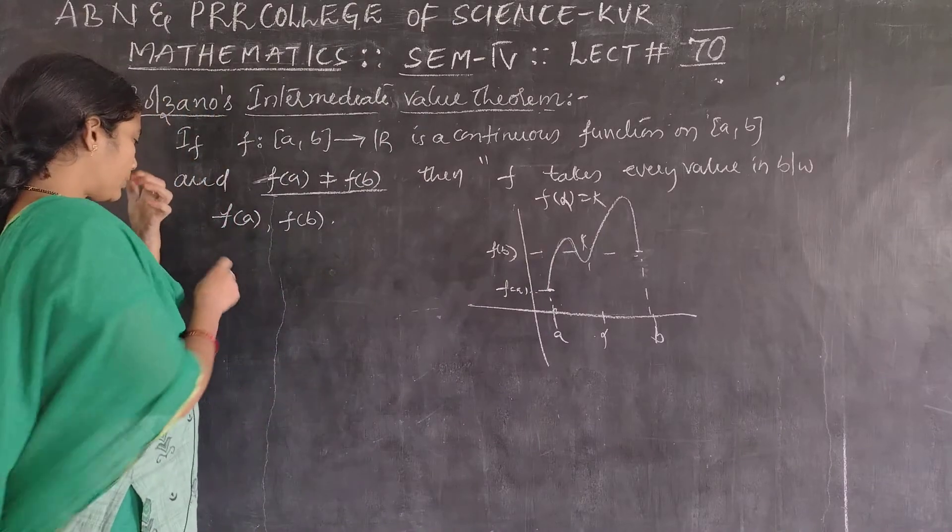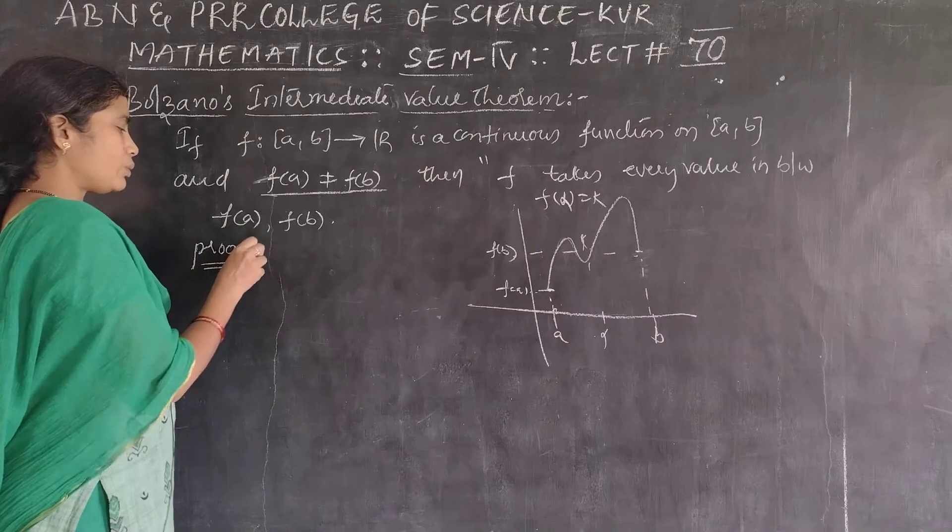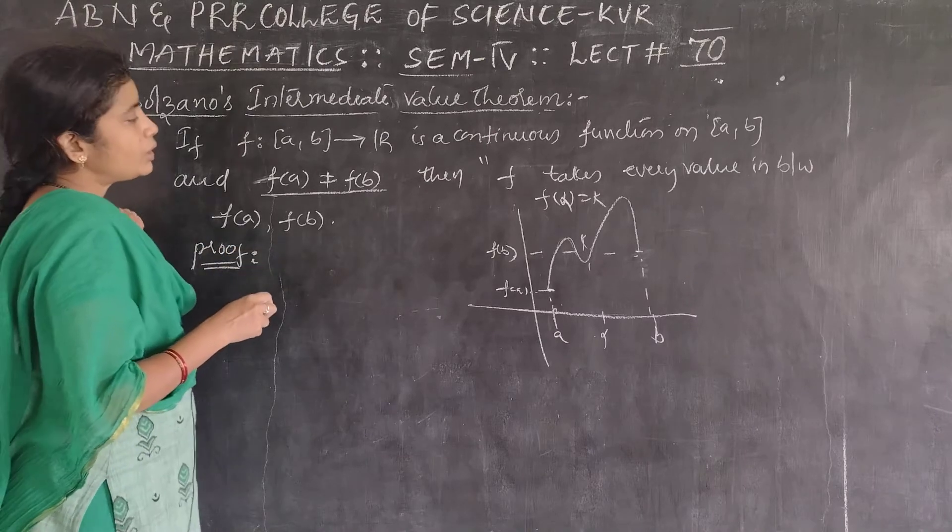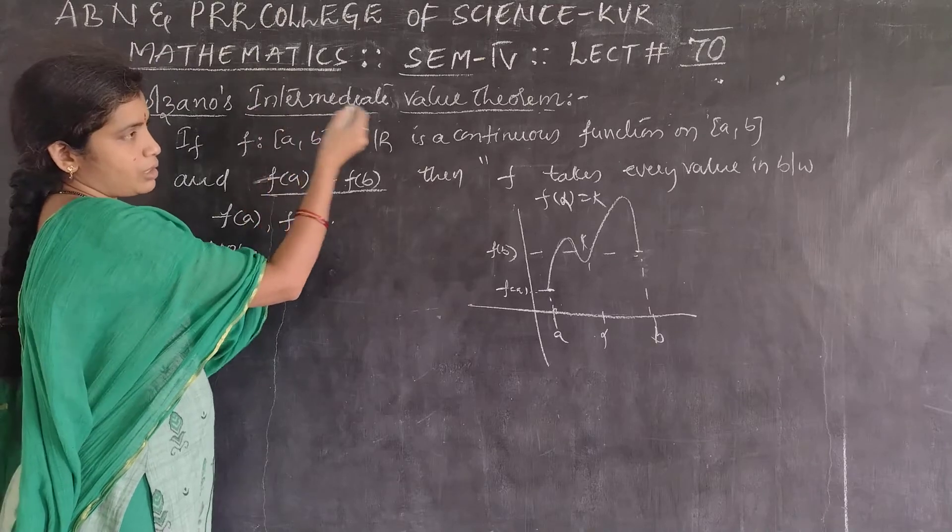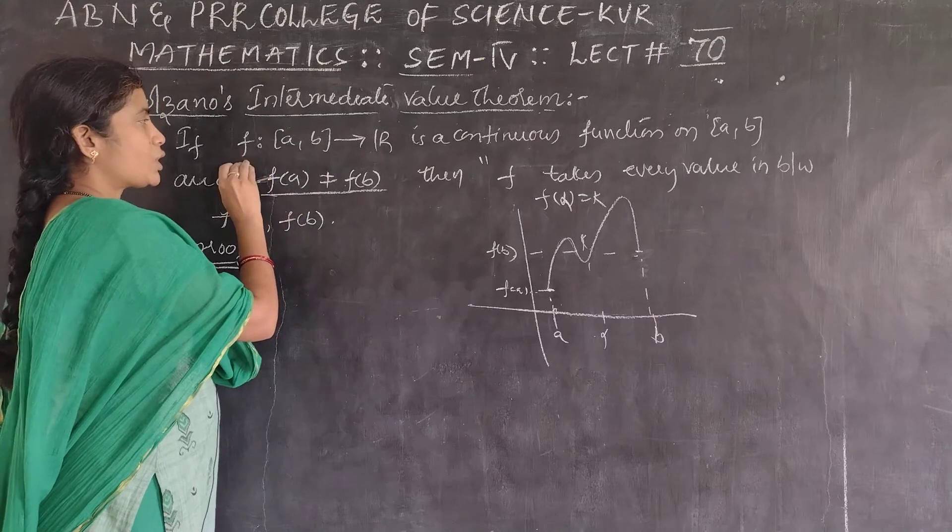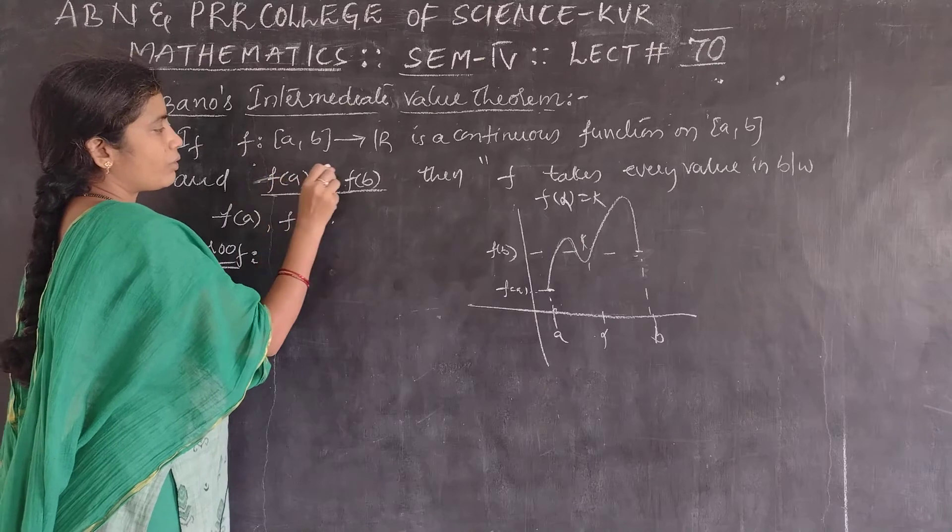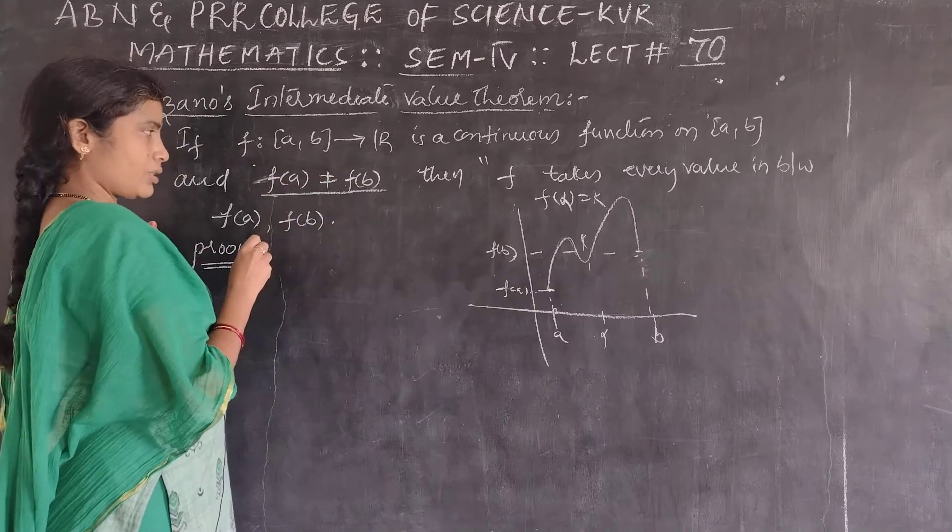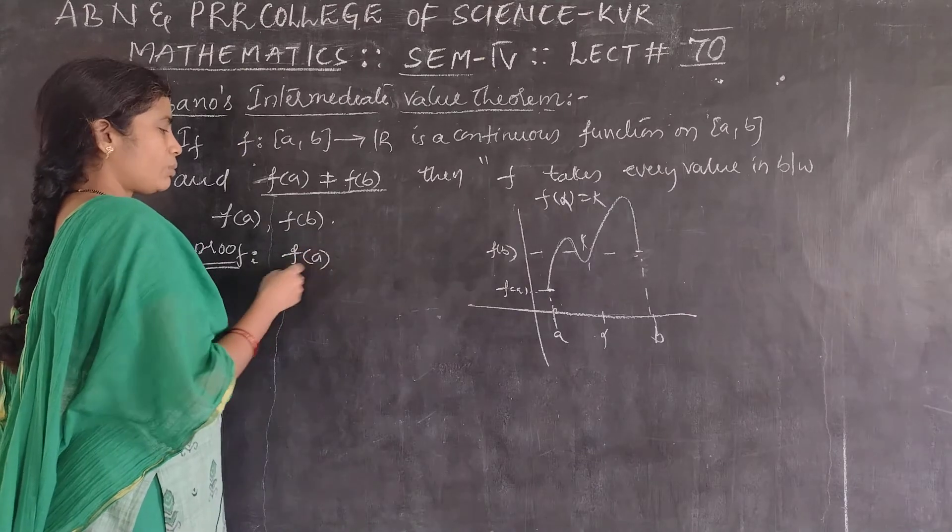The next problem is to use the location of roots theorem. We take a hypothesis, what is the continuous function? We use the continuous function in the closed AB.